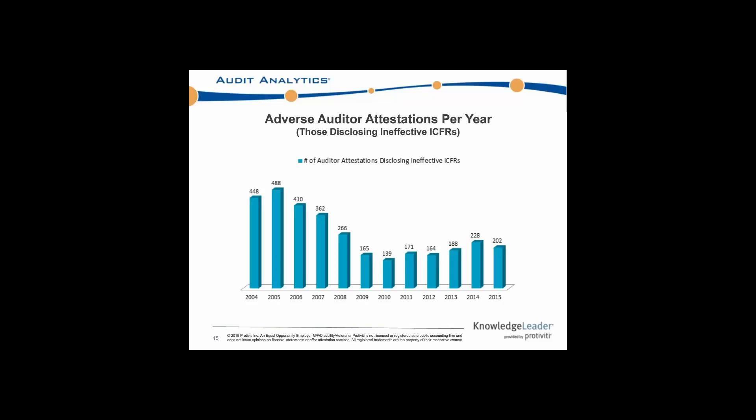That decline is clearly due to companies becoming more accustomed to the requirements. There's always an initial barrier to figuring out exactly what the regulatory bodies want, how best to go about these internal controls, and the systems to put in place. Since then, once it leveled out, there's been a steady uptick before leveling off again and dropping slightly in 2015.